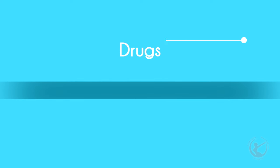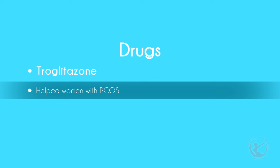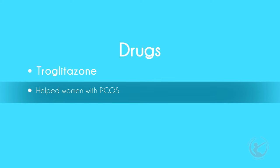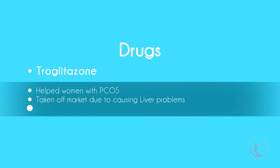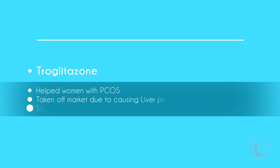Drugs: the drug troglitazone was shown to help women with PCOS, but it was taken off the market because it caused liver problems. In patients who haven't been able to tolerate metformin, newer drugs from the same family as troglitazone are now being trialled.